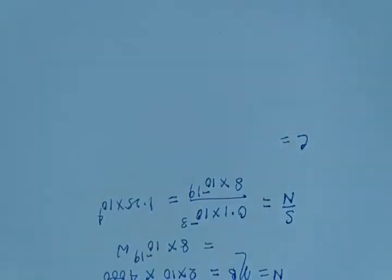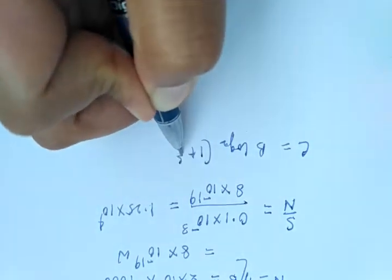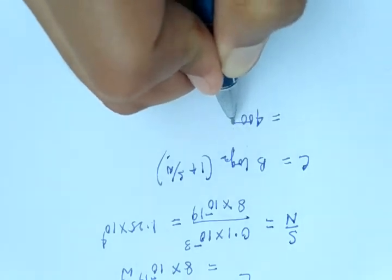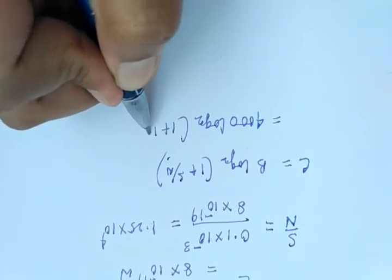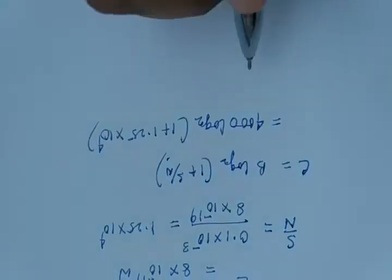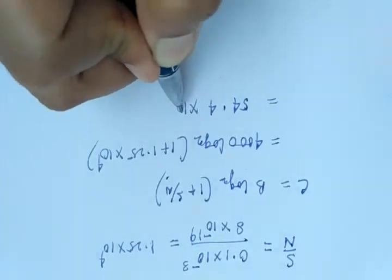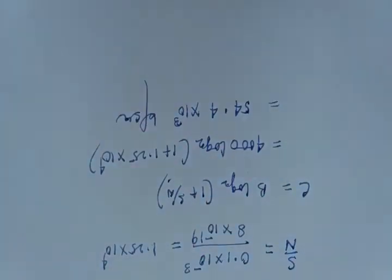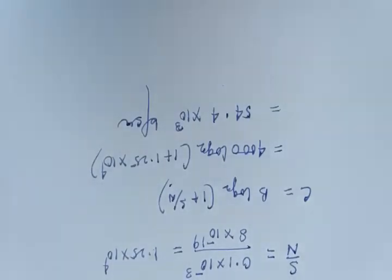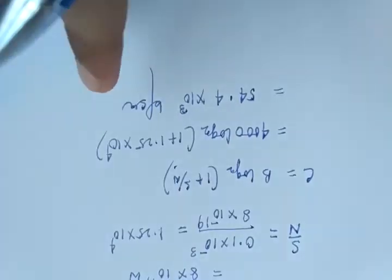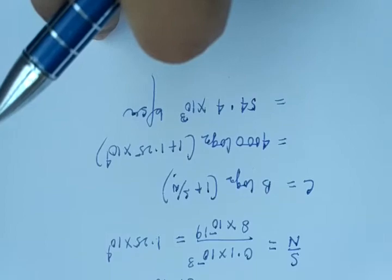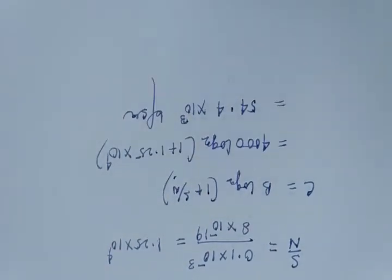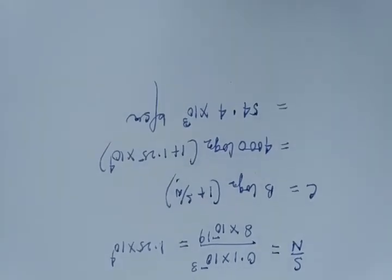Now calculate channel capacity: C equals B log 2 of 1 plus S by N. Substituting: C equals 4000 multiplied by log 2 of 1 plus 1.25 into 10 to the power 4. The answer is 54.4 into 10 to the power 3 bits per second. These types of tricky questions may come in your GATE exam, and with these important formulas, no other formulas from coding theory are needed.